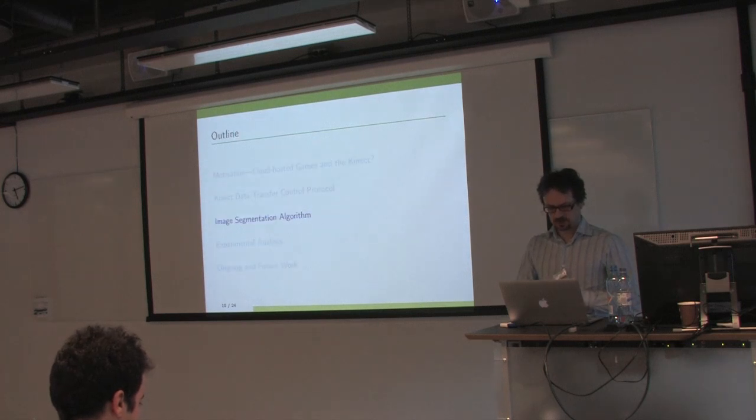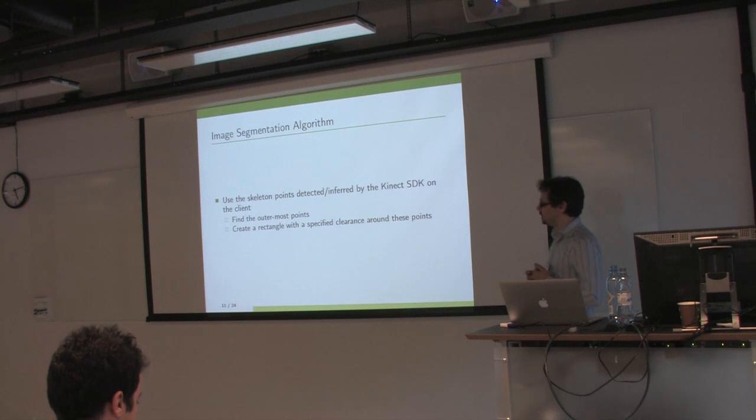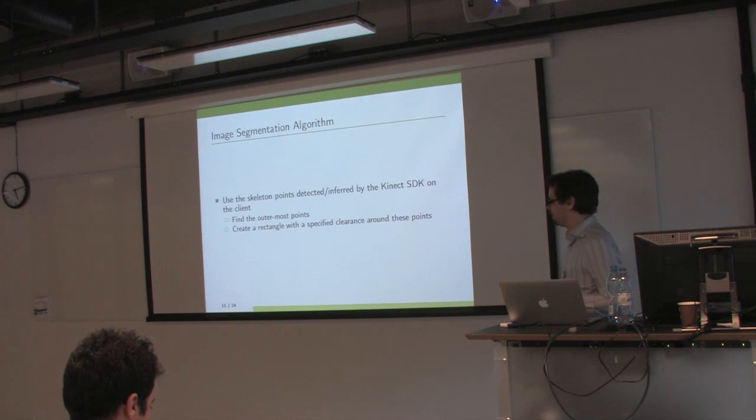In terms of how we do the image segmentation, we just harness the fact that the Kinect SDK gives you the skeleton points for the person, the 20 points on the person's body. Just find the points on the outermost extremities of the person and use that to simply segment the image.